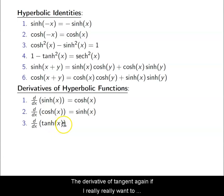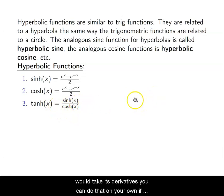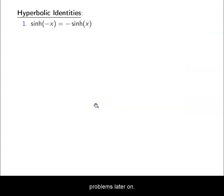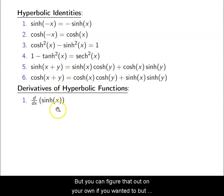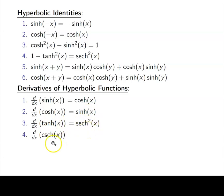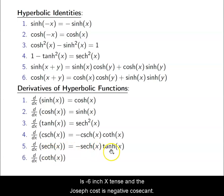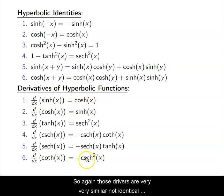The derivative of tanh is secanch squared. The derivative of cosecanch is negative cosecanch times coth. The derivative of secanch is negative secanch times tanh. The derivative of coth is negative cosecanch squared. These are very similar — if not identical in form — to the trig derivatives, just hyperbolic.